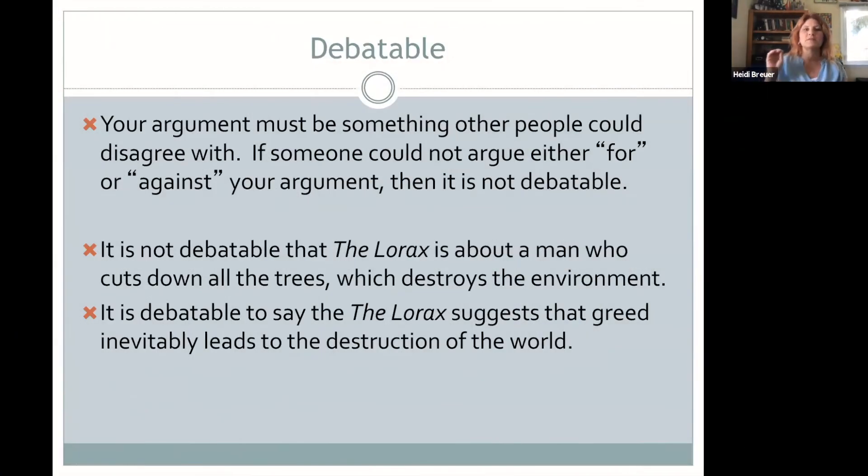First off, your argument has to be debatable. It has to be something that people could disagree with. If you can't disagree with it, if there's no way to disagree, then you're not making an argument. You're making an observation about something that happened in the text, not about what it means that it happened. For example, here's my examples from the Lorax. It's not debatable that the Lorax is about a man who cuts down all the trees, which destroys the environment. That's just what happens. That's plot. That's not theme. No one can argue with you about that.